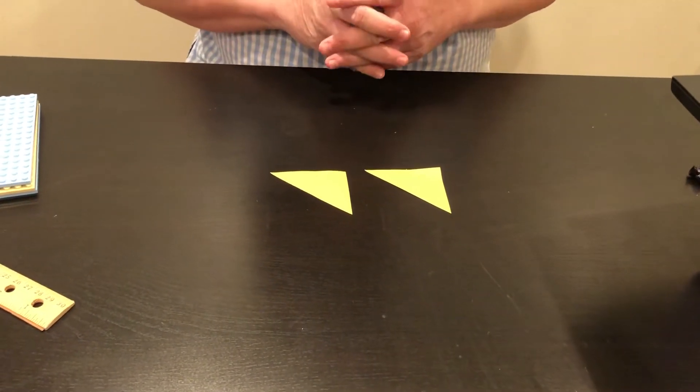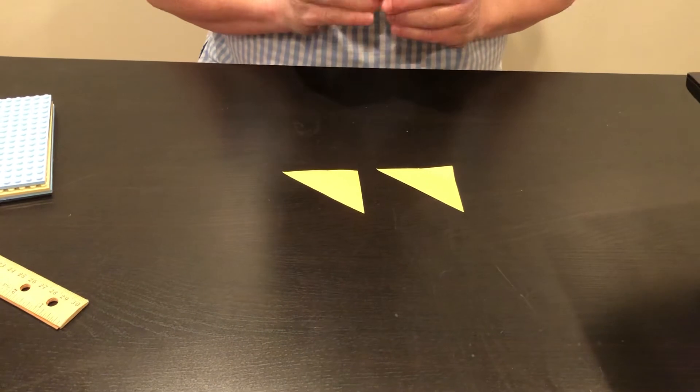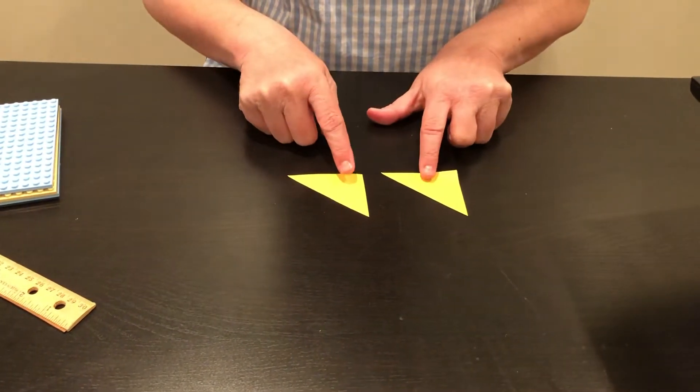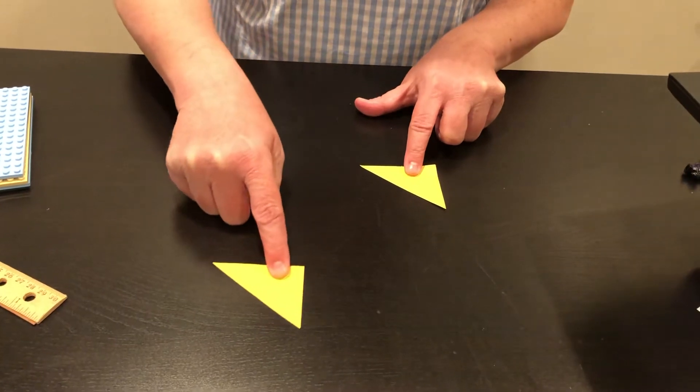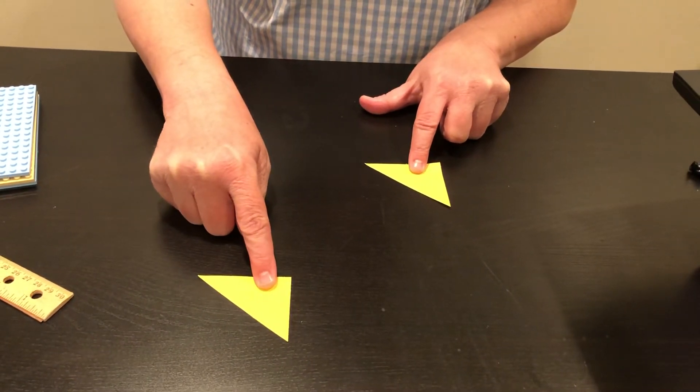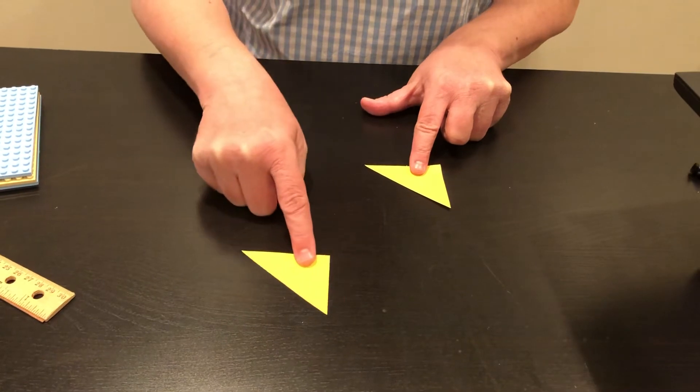One of the ways that you can move them is called a slide or a translation. It basically means this one stays in place and you slide this one wherever you want it to be. That is called a slide or a translation.